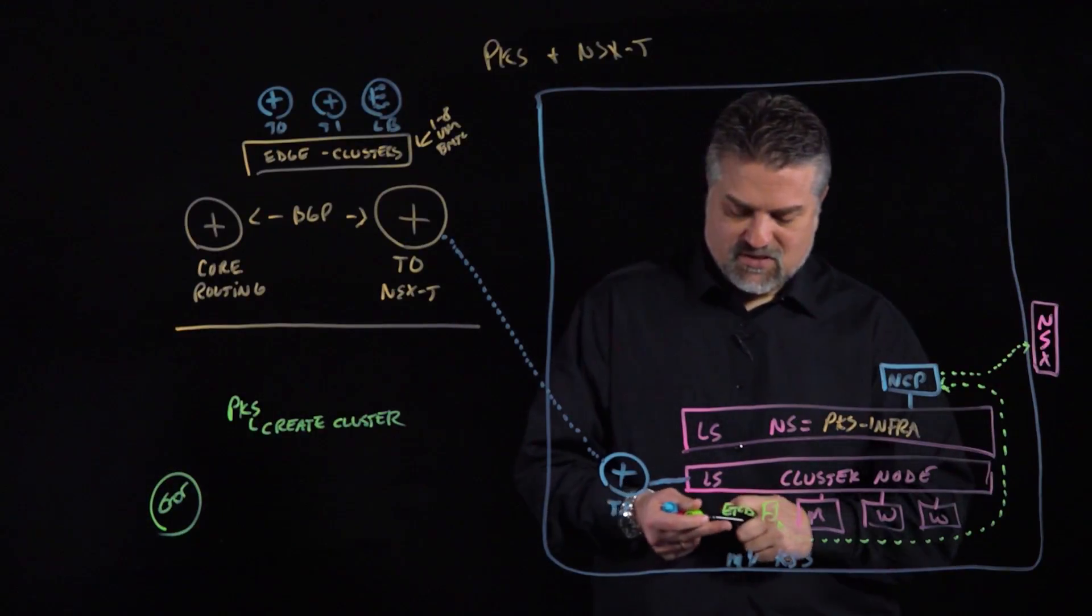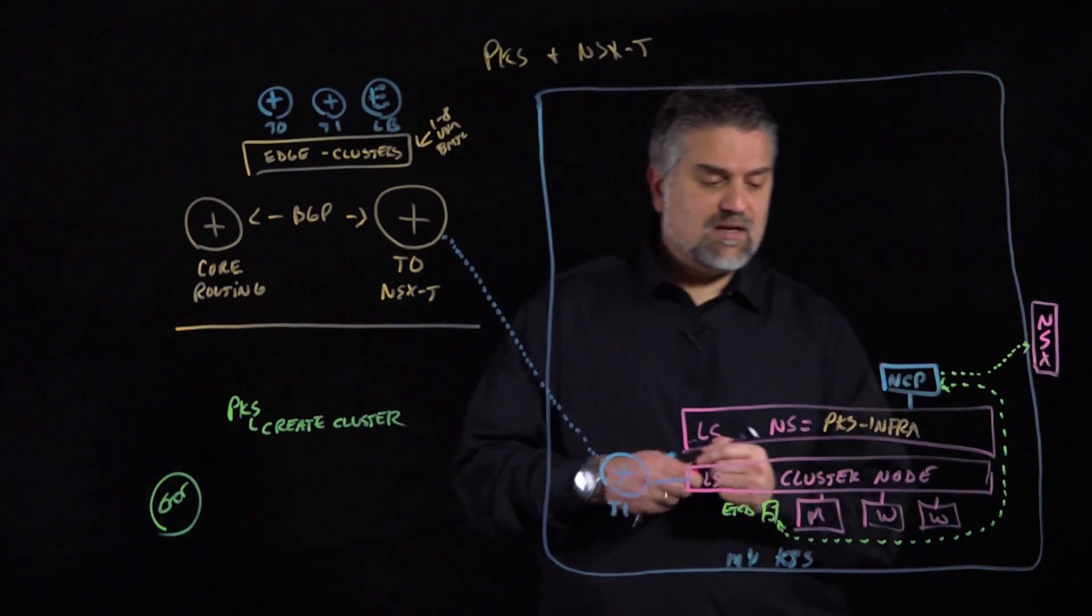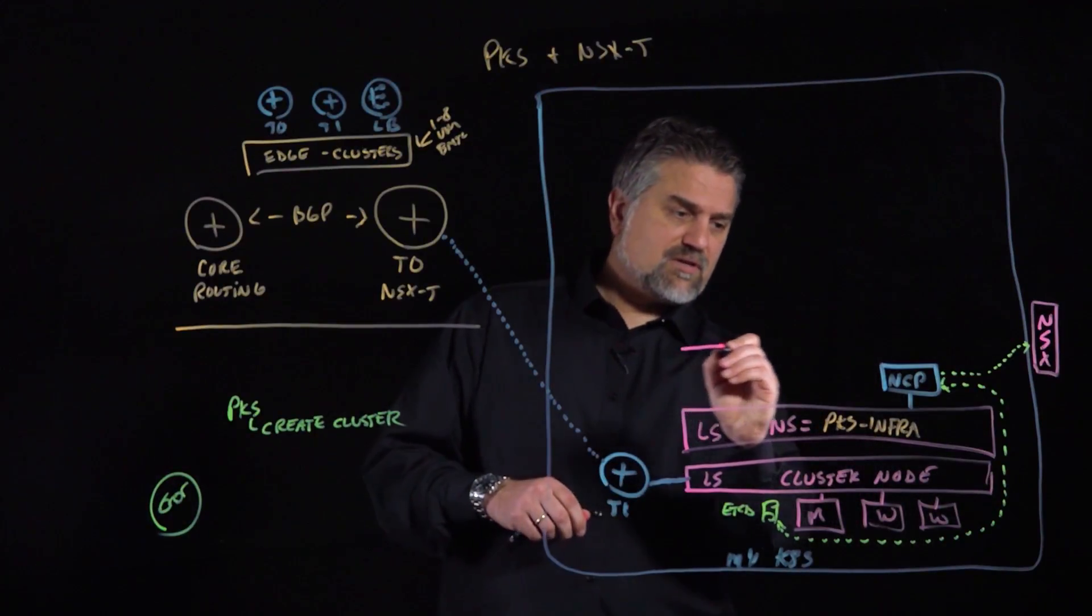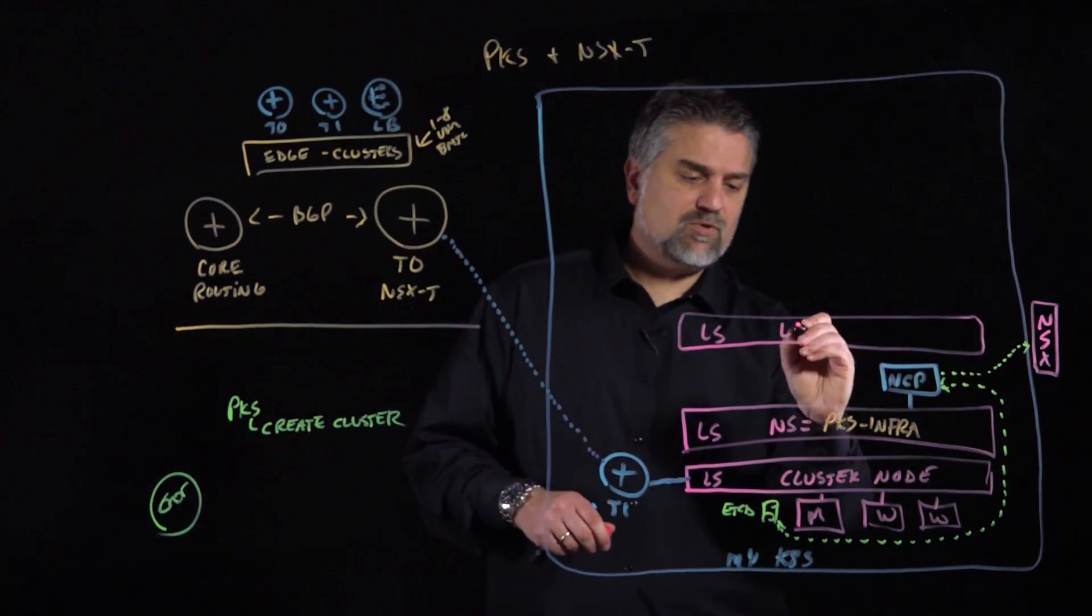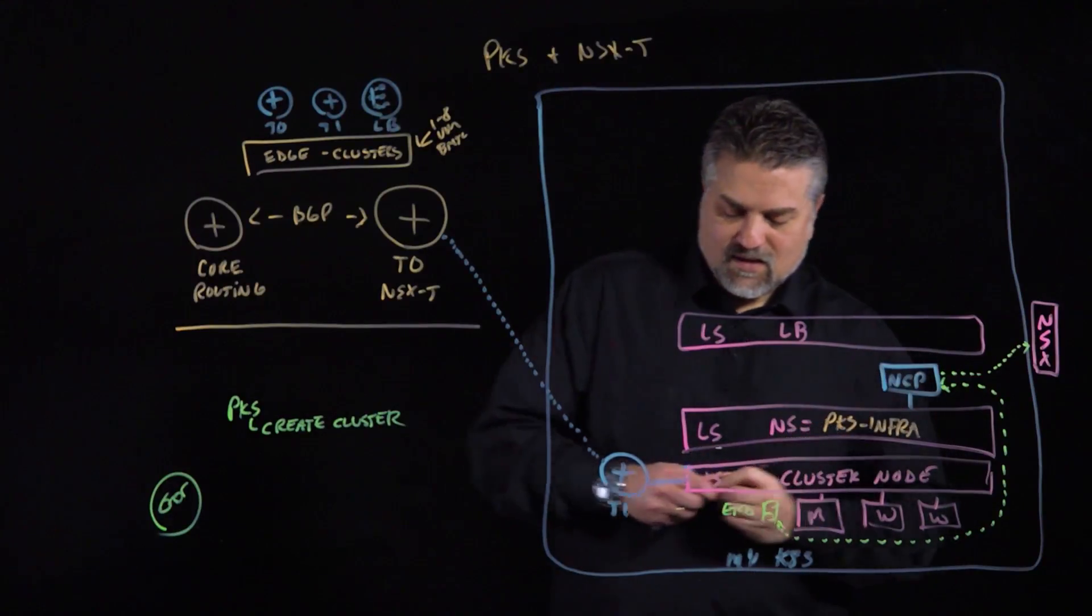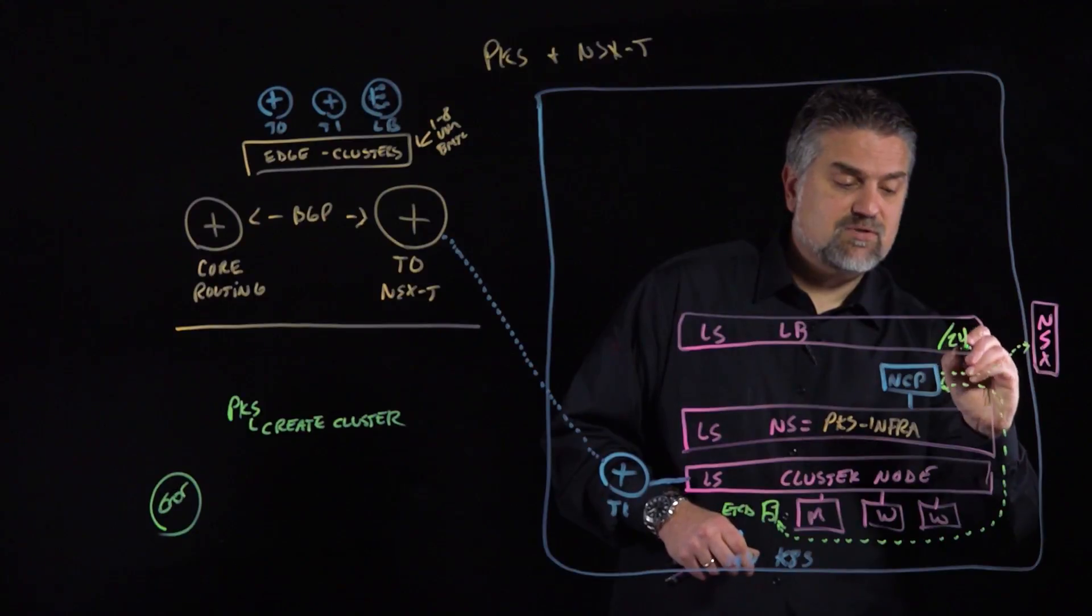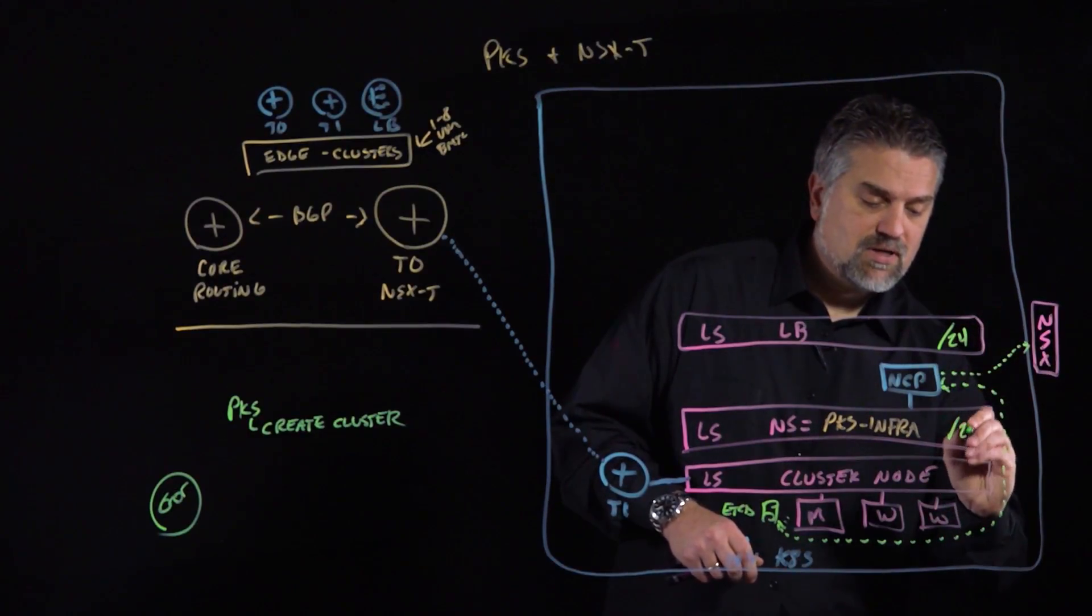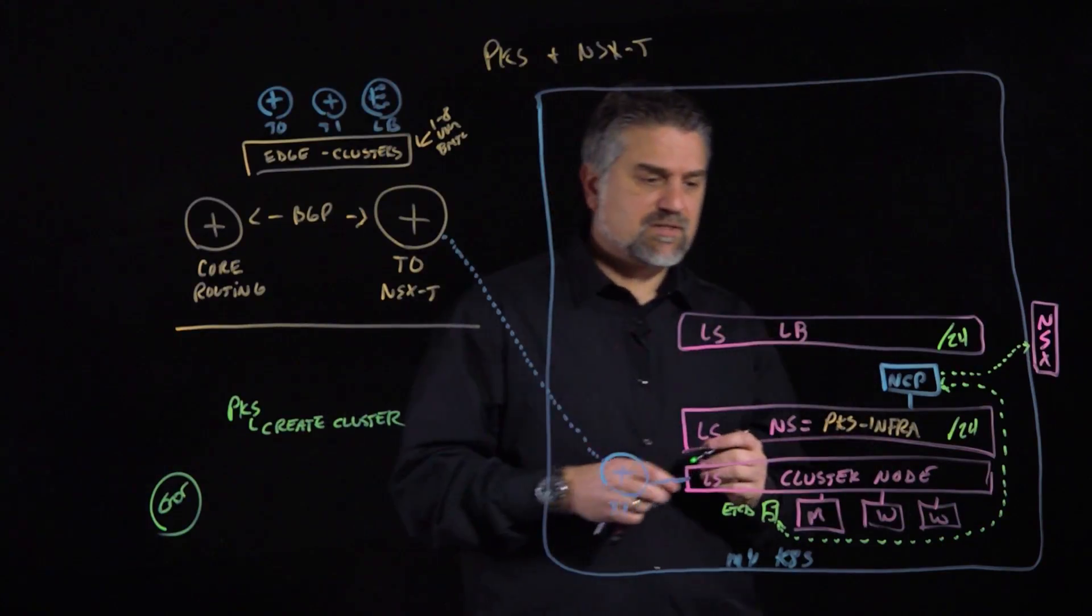So it's really performing this nice role of almost being like a traffic cop and watching what's happening inside of our Kubernetes cluster and making sure that NSX is reactive to that and creating the correct objects that match what we've defined in our Kubernetes constructs. The other logical switch that gets created is that every cluster that gets created in PKS gets a load balancer, and so a logical switch also gets created for that load balancer.